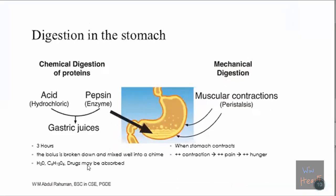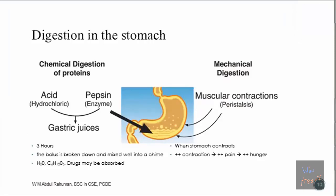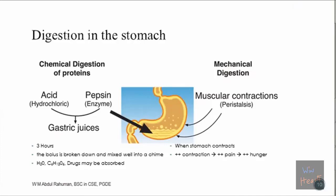Digestion in our stomach is quite interesting. There are two types clearly stated: chemical and mechanical. The mechanical digestion happens because of the contraction and relaxation of the stomach wall - we call this peristalsis. Because of this systematic contraction, food is mixed well, broken down into small pieces, and made into a substance called chyme. How long do you think food stays in our stomach?